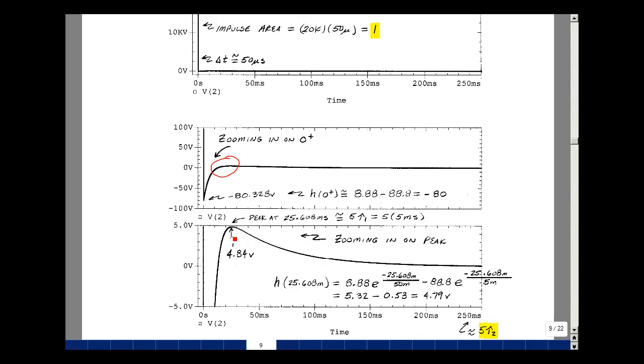You can see I have a peak of about 4.84 volts. This incident time is about 5 times the 5 millisecond time constant, or about 25 milliseconds. The exact value is 25.608 milliseconds. Let's plug that into our equation. Beyond 0, the impulse equals 0, so I have 8.88 times e to the minus t over tau minus 88.8 times e to the minus t over tau. Plugging in 25.608 milliseconds, I get 5.32 minus 0.53, which is 4.79. We're measuring 4.84 here.